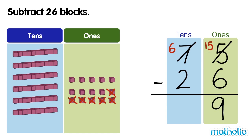15 ones minus 6 ones equals 9 ones. Next we subtract the tens. 6 tens minus 2 tens equals 4 tens. There are 49 blocks left. 75 minus 26 equals 49.